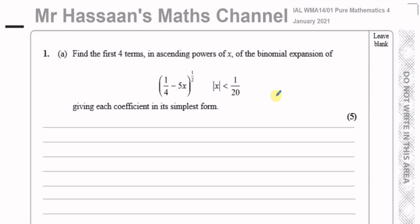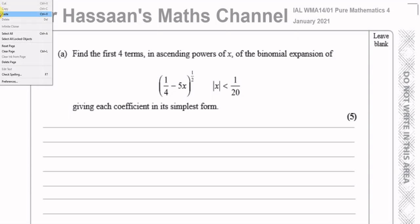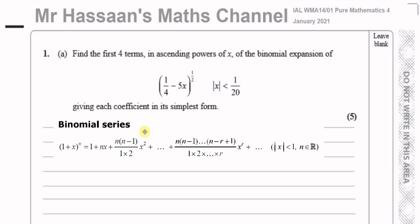In P2, we learn about how to use the NCR method. We have this calculator button which you can use, and we use N and R to get some of the coefficients we need — it gives us part of the coefficient of each term. However, the NCR button doesn't work when we have fractions as powers or negative integer powers. Therefore, we can't use the NCR button and are forced to use the formula, which is in the formula book. I'm going to bring it here — this is the binomial series formula from the formula book for P4, and that's what we're going to use to expand this bracket up to the first four terms.